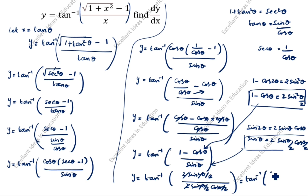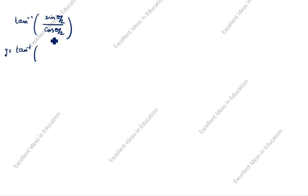So we have tan inverse of sin(theta/2) divided by cos(theta/2). Since sin over cos is tan, this simplifies to tan inverse of tan(theta/2), which equals theta divided by 2.